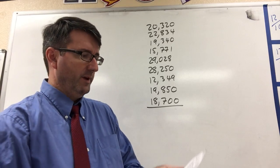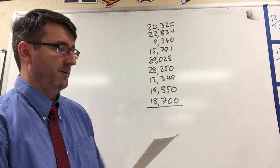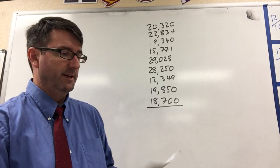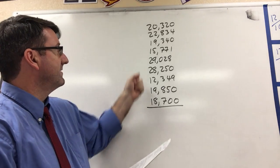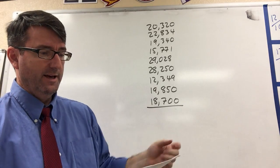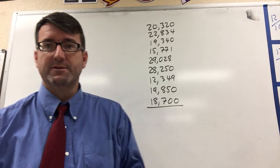All right, number one, we're given the heights of nine different mountains in feet. And we're asked to find the mean height and to round our answer to the nearest foot.